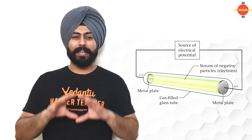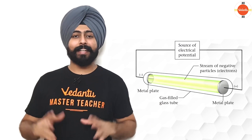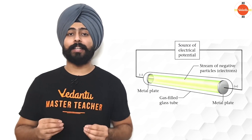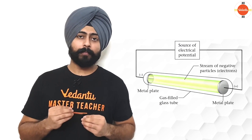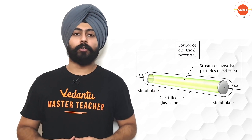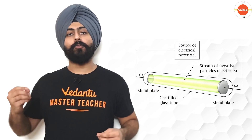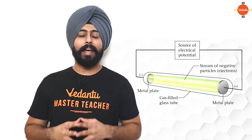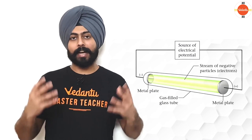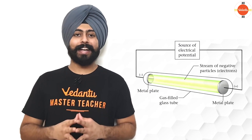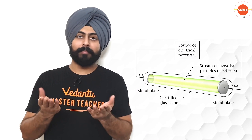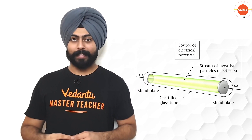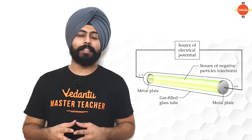Cut to cathode ray experiments. What we do is we take a glass tube, and inside that glass tube there is a gas at a very low pressure, and we apply a very high voltage onto that gas. It allows the gas to conduct electricity, and a discharge happens through the gas. Now when this discharge happens, we notice that there are certain particles or beams that move from the cathode to the anode. These beams are known as cathode rays or cathode ray particles.